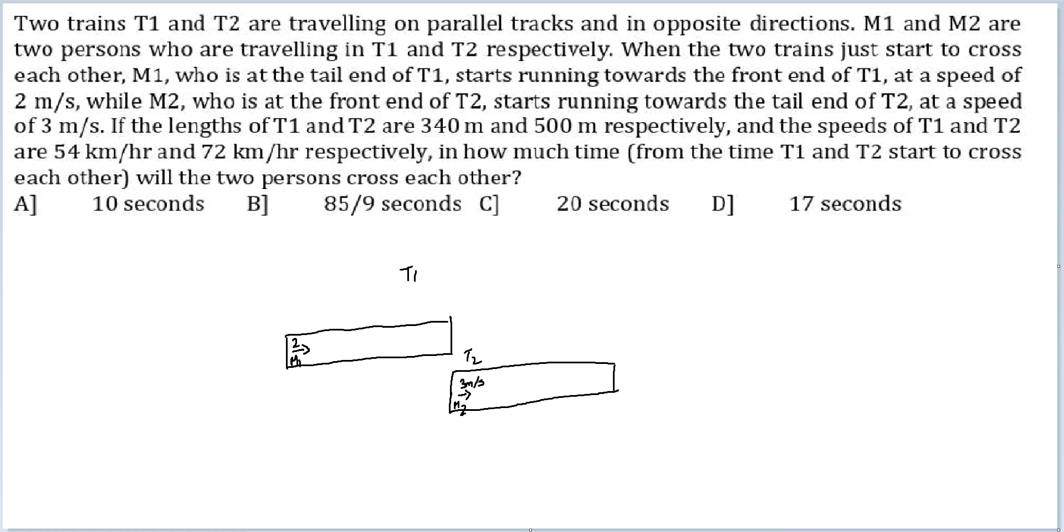If the length of T1 and T2 are 340 and 500 meters respectively. This is 340. This is 500. And the speeds of T1 and T2 are 54 km per hour and 72 km per hour. See, 54 km per hour is of no use for us. What is of use for us is 15 meter per second and 20 meter per second.